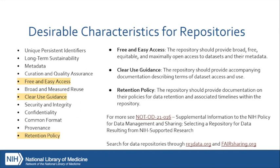Secondly, there should be clear use guidance. Repositories should have clear documentation for how data can be accessed and used. There may be particular licenses that limit the uses of the data, or access may need approval by a data use committee. For researchers working with sensitive data, they may want to explore controlled access repositories where a researcher is required to request access and state how they intend to use the data. Lastly, look at a repository's retention policy, which we'll discuss more when we cover the associated timelines part of Element Four.